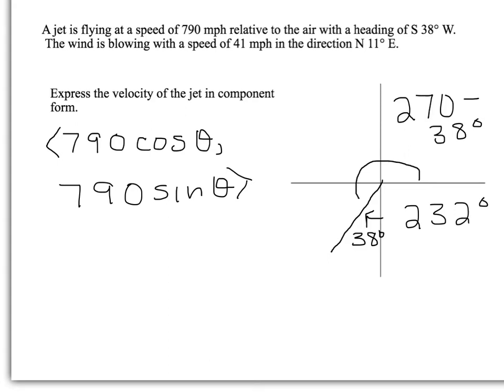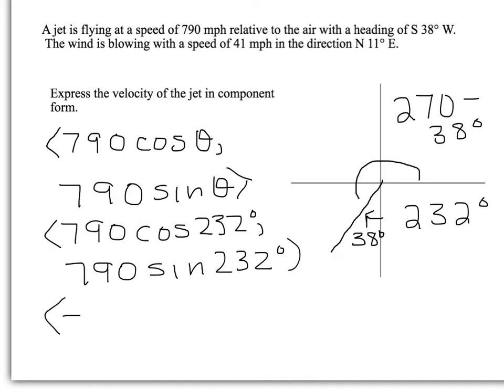So the velocity of the jet in component form is the speed relative to air times cosine of 232 degrees and 790 sine 232 degrees, which gives me negative 486.37 and my vertical component negative 622.53.